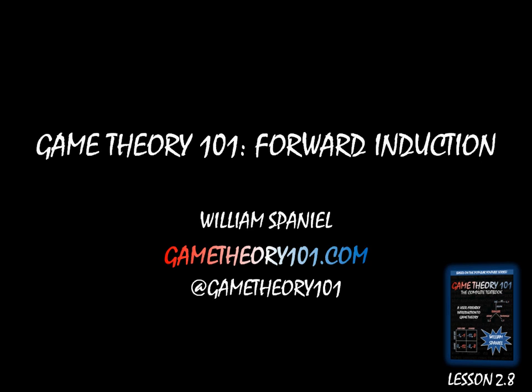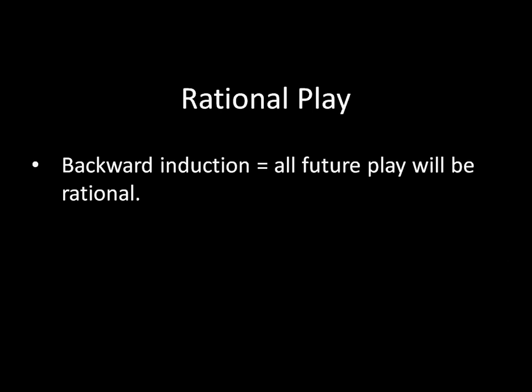Throughout this unit, we've been solving extensive form games by using backward induction. The basic idea with backward induction is that we're assuming all future play will be rational. At the end of the game, the last player to move will choose the option that gives him or her the best expected utility, and we can figure out what the best move is for the previous player based off of that information. We can take that logic and move all the way up the entire game tree and solve for the optimal moves at the beginning based off of what is going to be rational in the future.